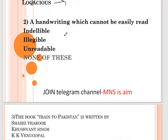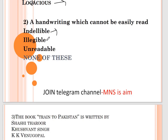Question number two: a handwriting which cannot be easily read. Options are indelible, illegible, unreadable, and none of these. Indelible means which cannot be erased — something that cannot be wiped out. Illegible means which cannot be easily read, so illegible is the correct answer.